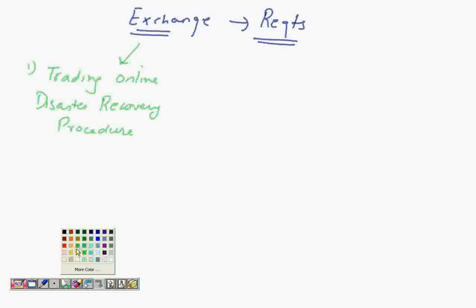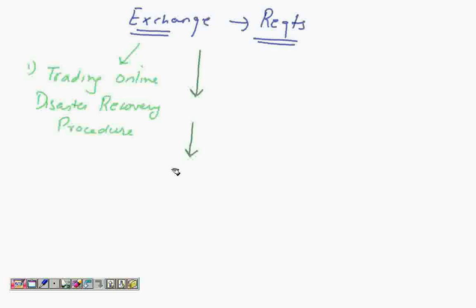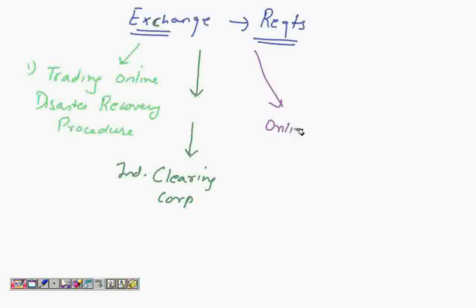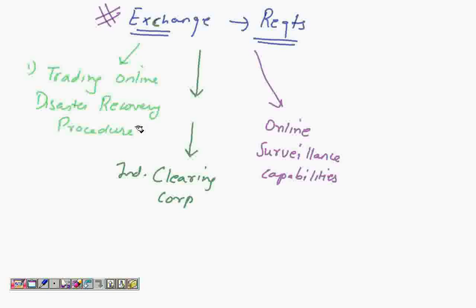Another requirement is the role of clearing and clearing settlement. There has to be an independent clearing corporation — that is a mandate for every exchange to have. At the same time, we are also looking at online surveillance capabilities, which is another very important exchange requirement.